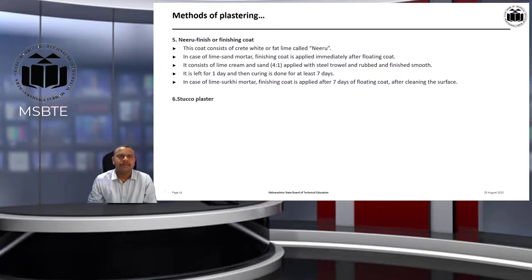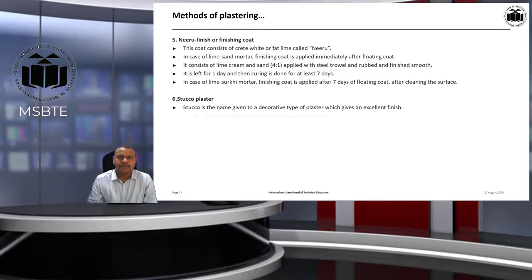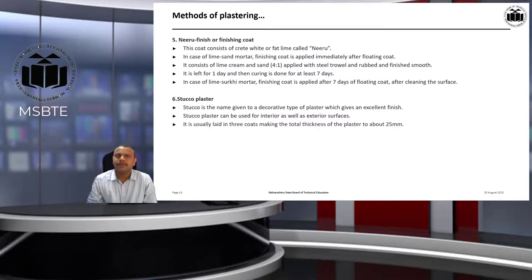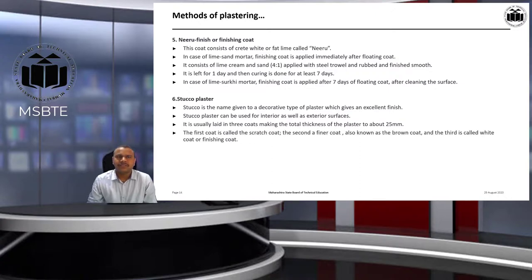The sixth method is stucco plaster. Stucco is a decorative type of plaster which gives an excellent finish and can be used for interior as well as exterior surfaces. It is usually laid in 3 coats making the total thickness about 25 mm. The first coat is called the scratch coat, the second is the finer coat also known as brown coat, and the third is called the white coat or finishing coat.